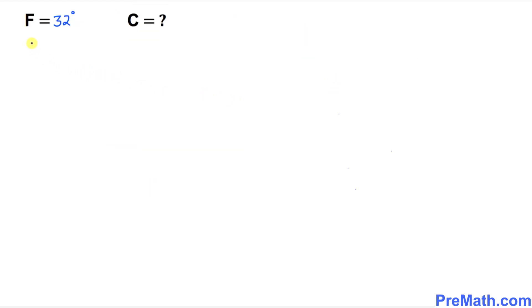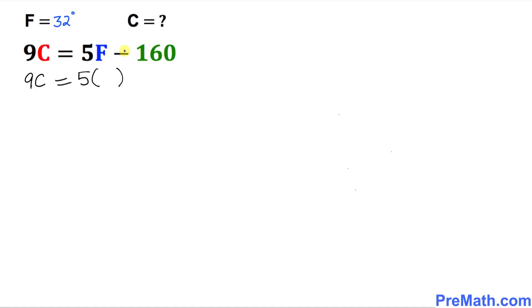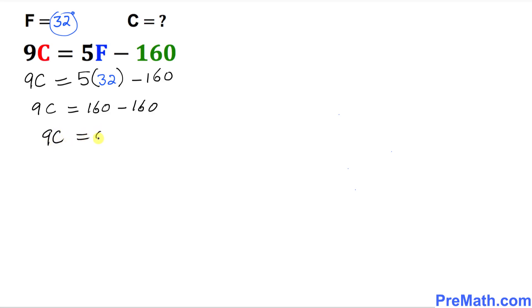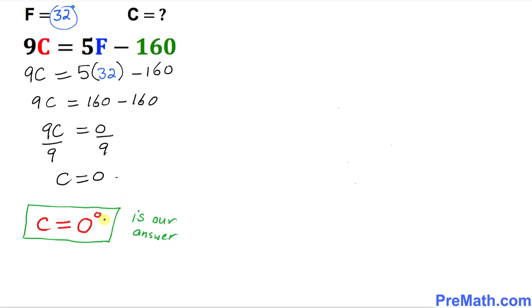Here is our next example. F equals 32 and C is unknown, so we use the formula 9C equals 5F minus 160. Plugging in: 9C equals 5 times 32 minus 160, which gives 160 minus 160, so 9C equals 0. Dividing both sides by 9, C equals 0 degrees — that is our answer.